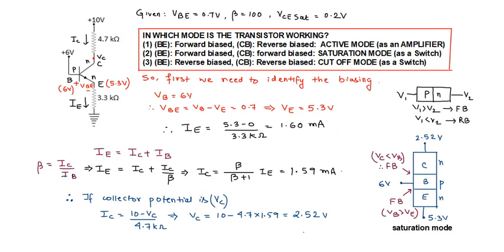In a transistor we have two junctions: one is the base-emitter junction and the other is the collector-base junction. Depending on whether the junction is forward biased or reverse biased we can find the mode. If the base-emitter junction is forward biased and the collector-base junction is reverse biased, the transistor is in active mode. If both junctions are forward biased, the transistor is in saturation mode, and if both are reverse biased, it is in cut-off mode.